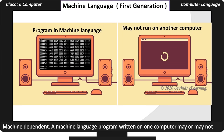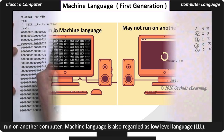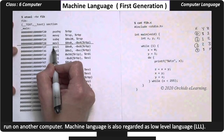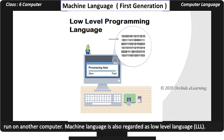Machine language is extremely machine dependent. A machine language program written on one computer may or may not run on another computer. Because of this, very few people opt for specialization in machine language. That is why machine language is also regarded as a low level language.